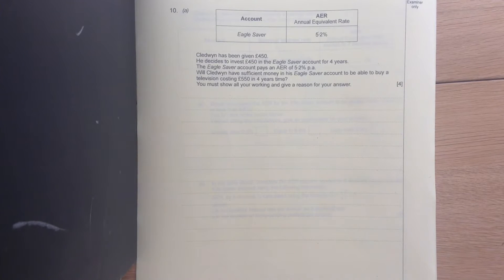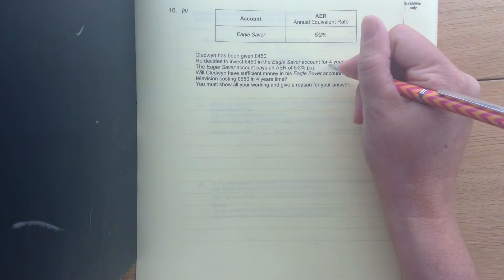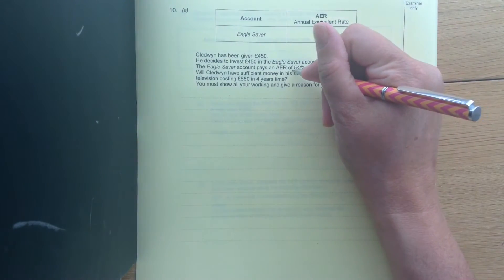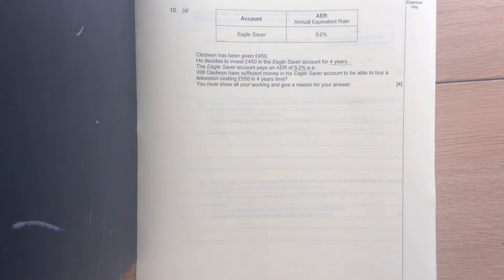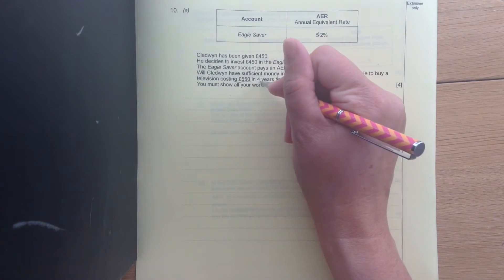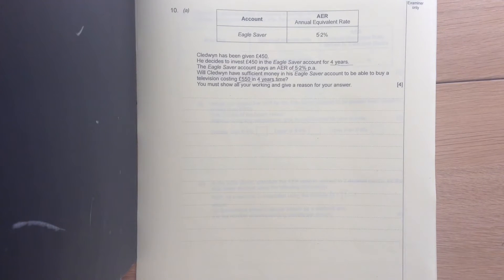Quedwin has been given £450. He decides to invest £450 in the Eagle Safer account for 4 years. The Eagle Safer account pays an AER of 5.2% per annum. Will Quedwin have sufficient money in his Eagle Star account to buy a television costing £550 in 4 years? You must show all your workings and give a reason for your answer.